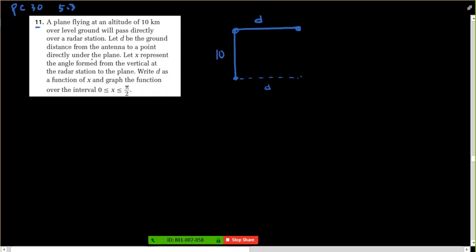Let X represent the angle formed from the vertical at the radar station to the plane. So here's the radar station from the vertical down to the plane. So here's the plane right here. And this would be the angle, or not theta, but X. So that's the angle X. So we've got a right triangle here, 10 units here, and we've got D units here, and we've got angle X here.